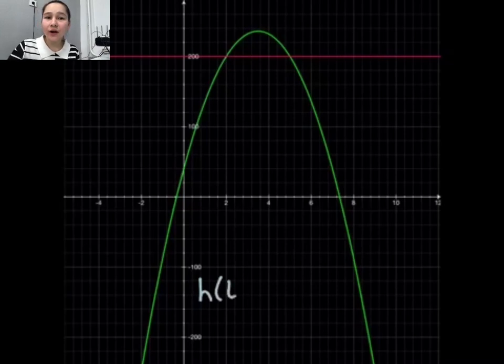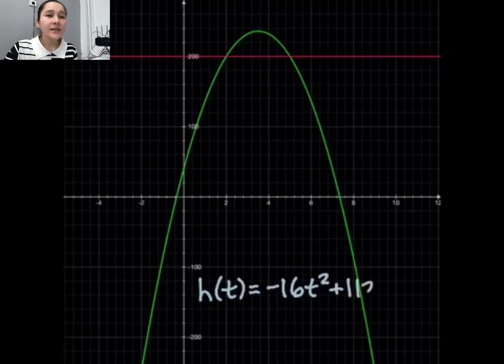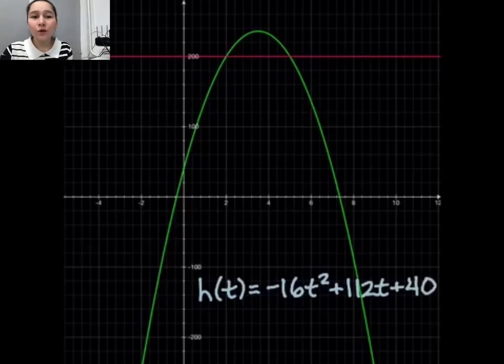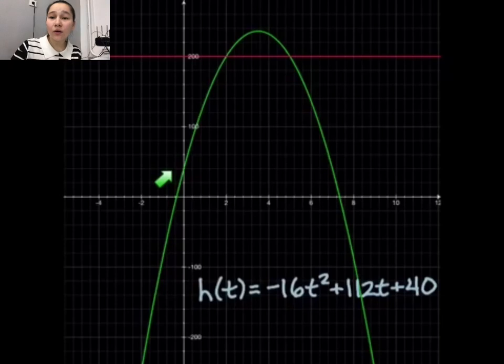Right here we have the actual nice formal graph of that same function we were looking at just a second ago. And this is a graph of h of t equals negative 16t squared plus 112t plus 40.